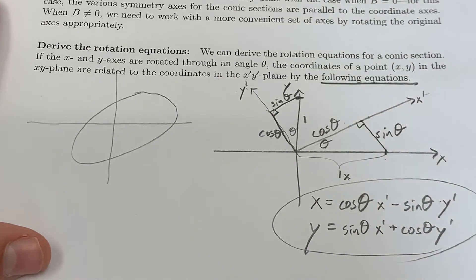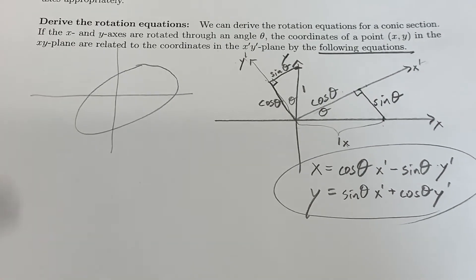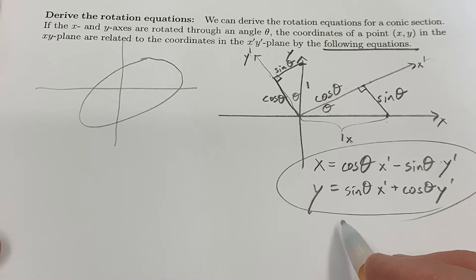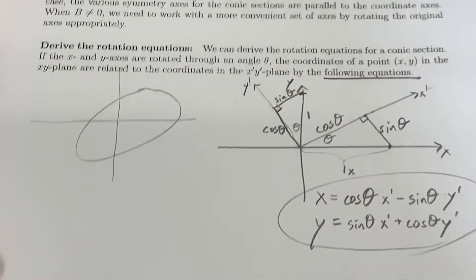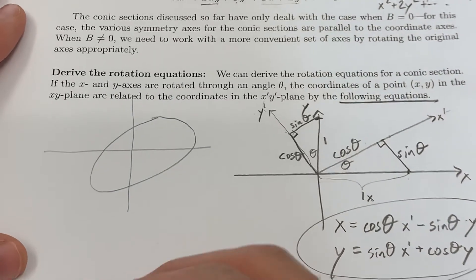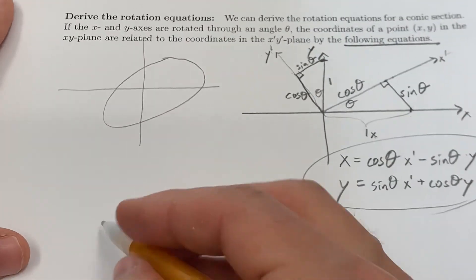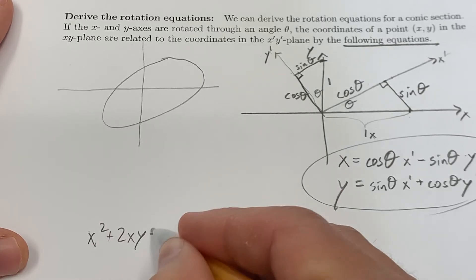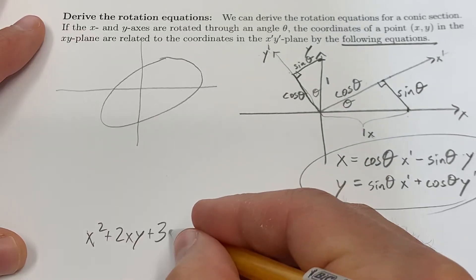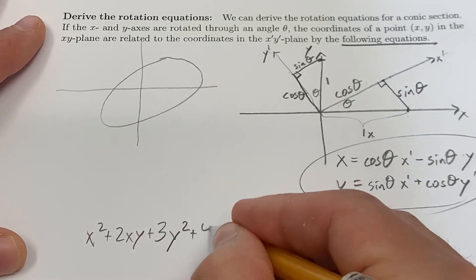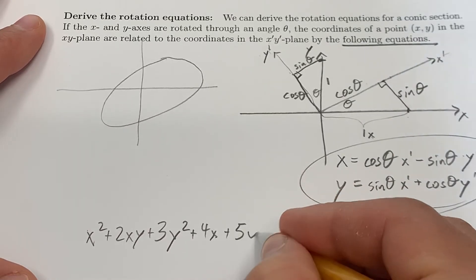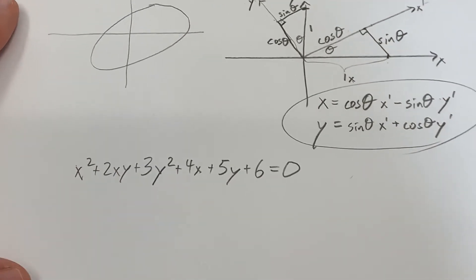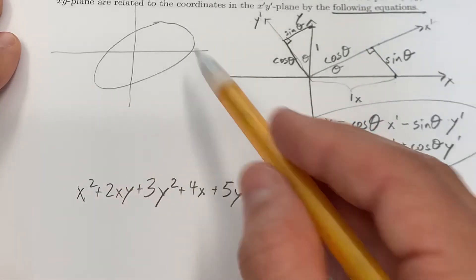Those are called the rotation equations. And the rotation equations are useful when you're trying to rotate a shape. So let's imagine you have a shape like this. You have something like x² + 2xy + 3y² + 4x + 5y + 6 = 0. Some messy shape like that. And you want to rotate that shape. If you want to rotate it, what you're going to do is every place you see x, you're going to substitute that in.